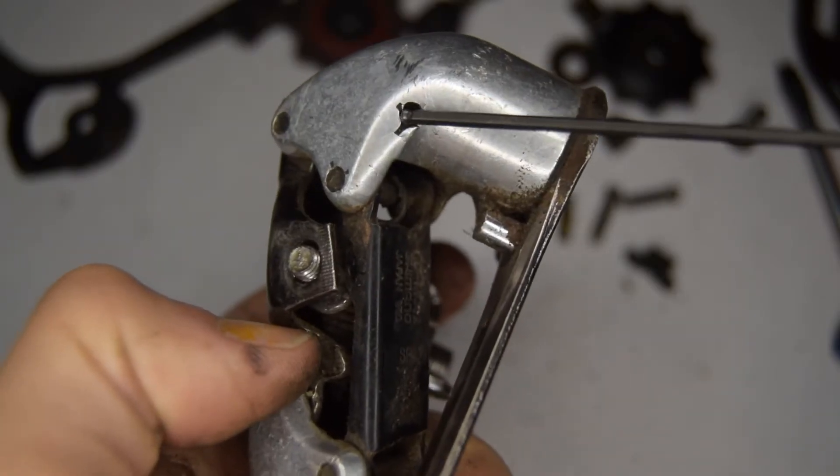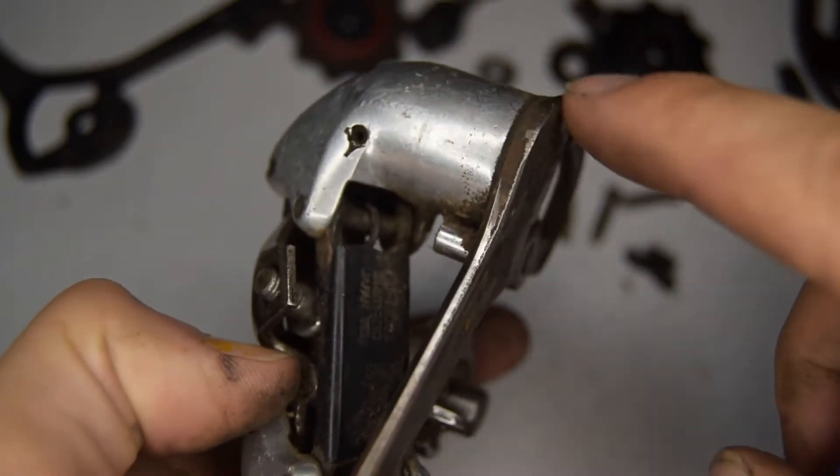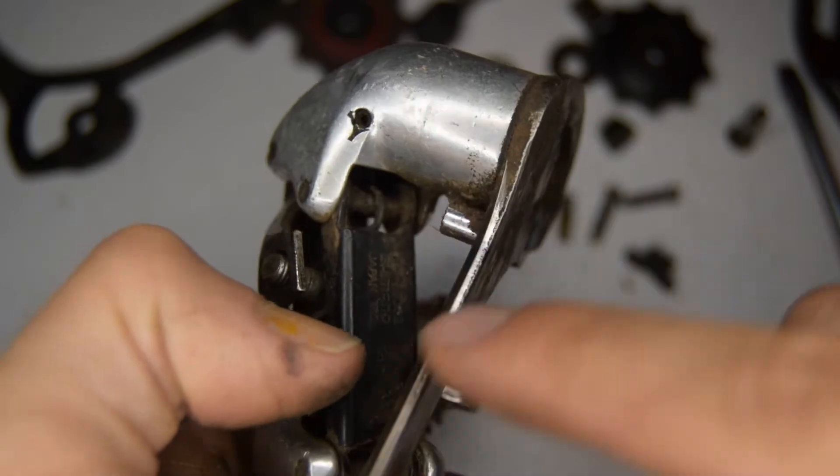We're now going to remove this little bolt here to take off the back cage plate.